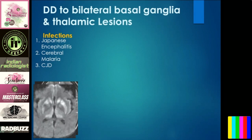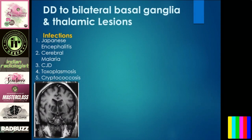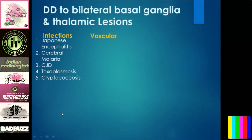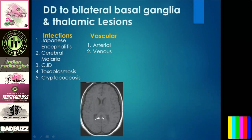Toxoplasmosis shows severe perilesional edema and sometimes involves the basal ganglia and thalamus — always with a history of immunocompromise or HIV, and you can evaluate further with spectroscopy. Cryptococcosis mainly affects immunocompromised patients in the basal ganglia and thalamus. For vascular etiologies: if the patient complains of vomiting, loss of vision, headache, think of arterial thrombosis of arteries supplying the thalamus — posterior circulation — or MCA for basal ganglia. Evaluate with MR angiography. For venous thrombosis, look for hypointensity on GRE or filling defect on MR venogram.